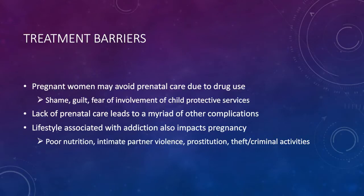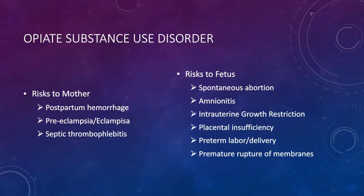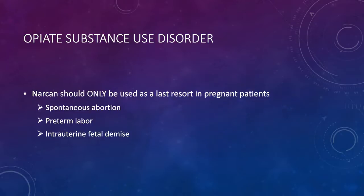Moving to opiate substance use disorder: risks to the mother include postpartum hemorrhage, preeclampsia and eclampsia, and septic thrombophlebitis. Risks to the fetus include spontaneous abortion, amniotitis, intrauterine growth restriction, placental insufficiency, preterm labor and delivery, and premature rupture of membranes. Narcan should only be used as an absolute last resort in a pregnant patient — giving a pregnant woman Narcan will instantly put the baby into withdrawal and could lead to fetal death, spontaneous abortion, or preterm labor.